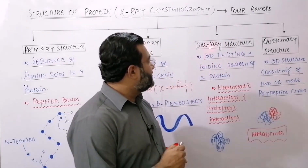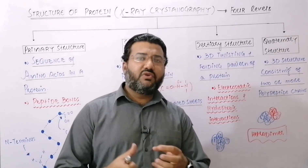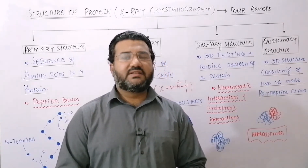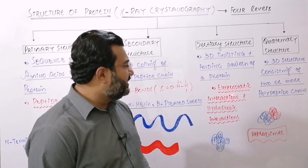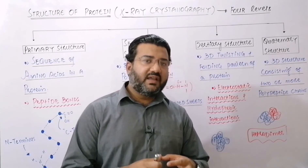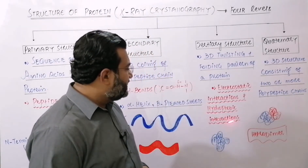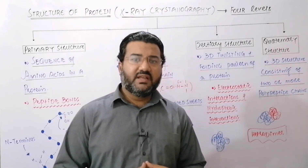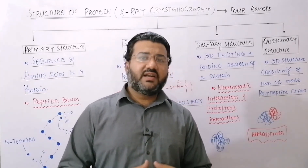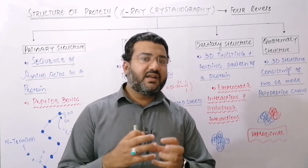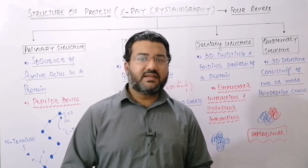The third level is the tertiary structure. In tertiary structure, the three-dimensional twisting and folding pattern of a protein is observed — that twisting and folding back of the polypeptide backbone results in the formation of the tertiary structure. Tertiary structure is maintained by non-covalent interactions like electrostatic interactions, which are ionic bonds present between the NH3+ part and COO- part of zwitterions, and hydrophobic interactions, which are non-covalent forces of attraction present between the non-polar R groups of the amino acids.